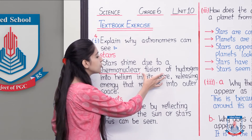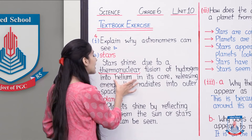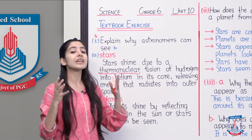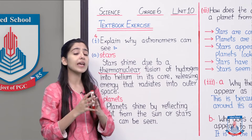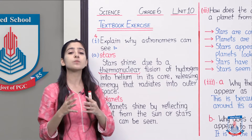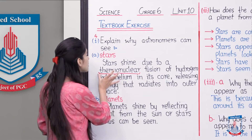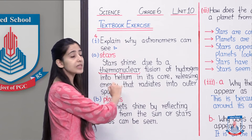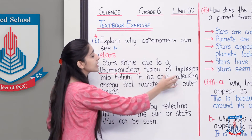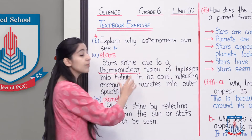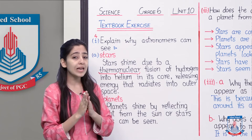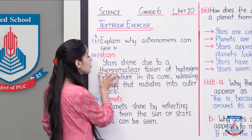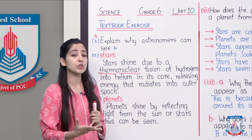Yeh tha structure hamare atom ka. Yahan likha hai fusion of hydrogen into helium — hydrogen atom, helium atom ke saath takra raha hai, aur jab yeh takrao hota hai, jab yeh do fuse hote hain, aapas mein milte hain, to thermonuclear reaction hota hai. Thermonuclear ka yeh matlab hai ke do nucleus — matlab hydrogen ka nucleus aur helium ka nucleus — aapas mein milte hain, aur thermo se yaad rakhiyega ke heat produce hoi.